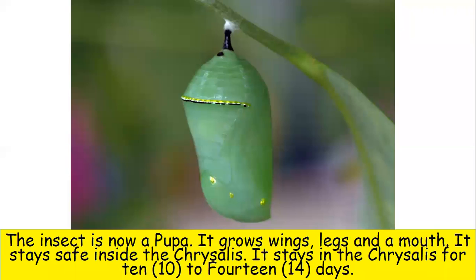The insect is now a pupa. It grows wings, legs, and a mouth. It stays safe inside the chrysalis for 10 to 14 days.